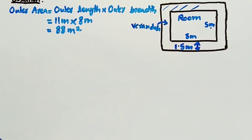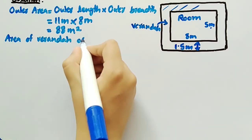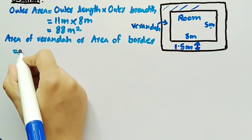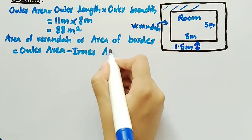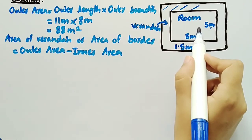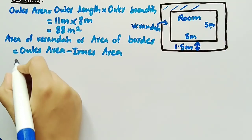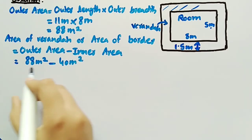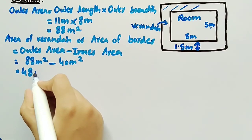Now we will find the area of veranda, that is also the area of border, and it is equal to outer area minus inner area. Outer area is the area of room and veranda as a whole, and inner area is just the area of the room. Outer area is 88 meter square minus inner area 40 meter square. 88 minus 40 equals 48, so area of veranda or area of border is 48 meter square.